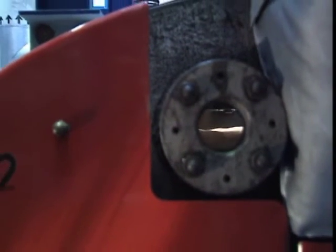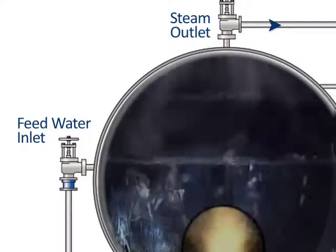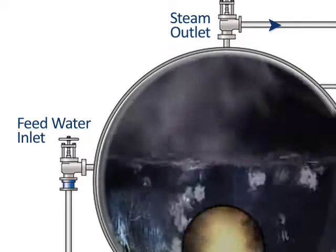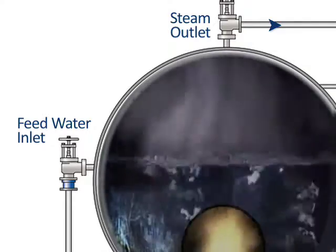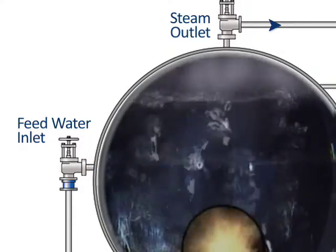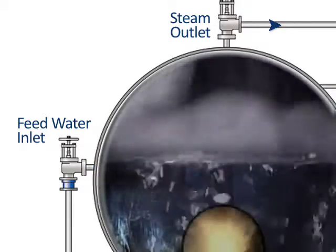Water must be fed into a boiler to replace the water which has been converted to steam. A common method of achieving this is known as on-off level control. When water level falls to a predetermined point, the feed pump switches on and fills the boiler to the required level, and so the cycle is repeated. It's fairly simple to implement, but it does disturb the delicate balance inside the boiler.